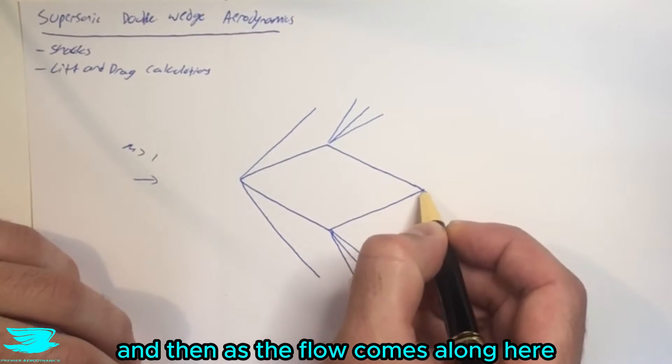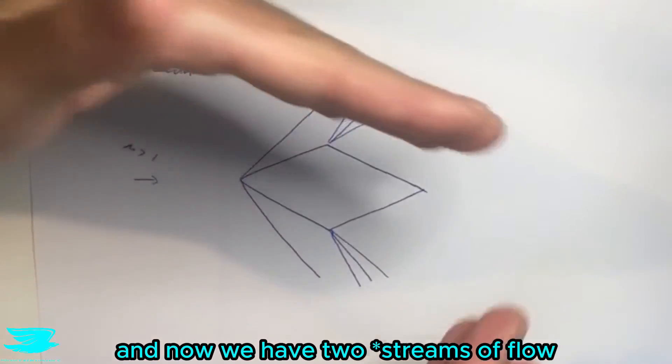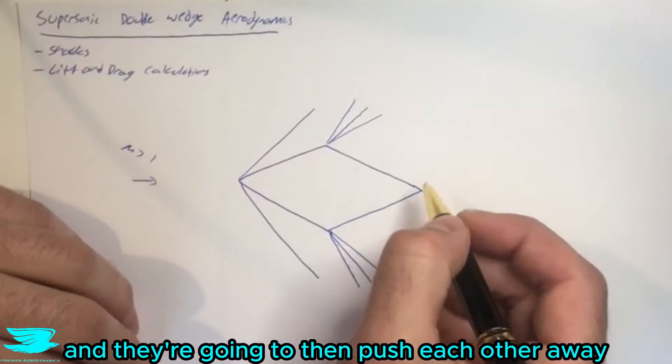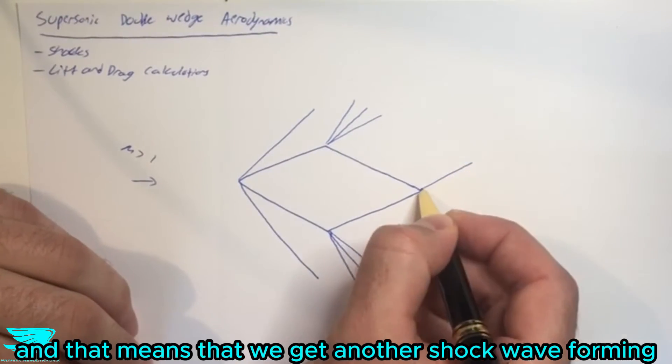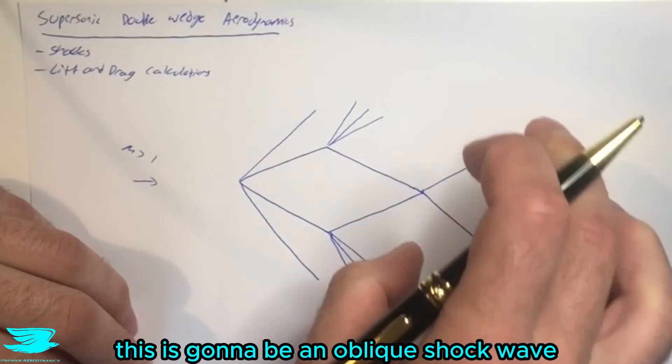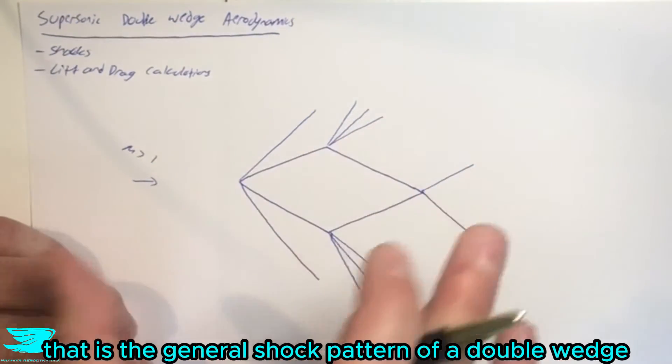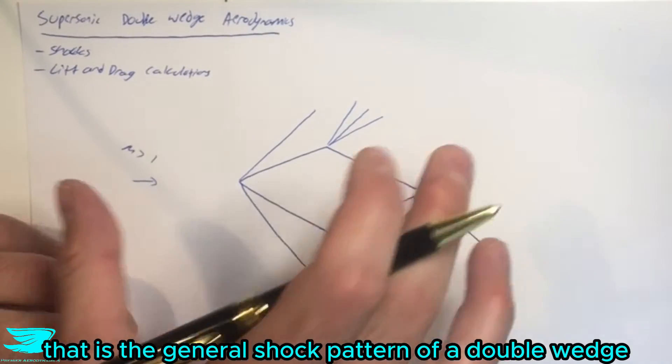And then as the flow comes along here, we get to the end here. Now we have two jets of flow really meeting each other. And they're going to then push each other away. And that means that we get another shockwave forming at the back here. And again, this is going to be an oblique shockwave. So it is lossy. So that is the general shock pattern of a double wedge airfoil.